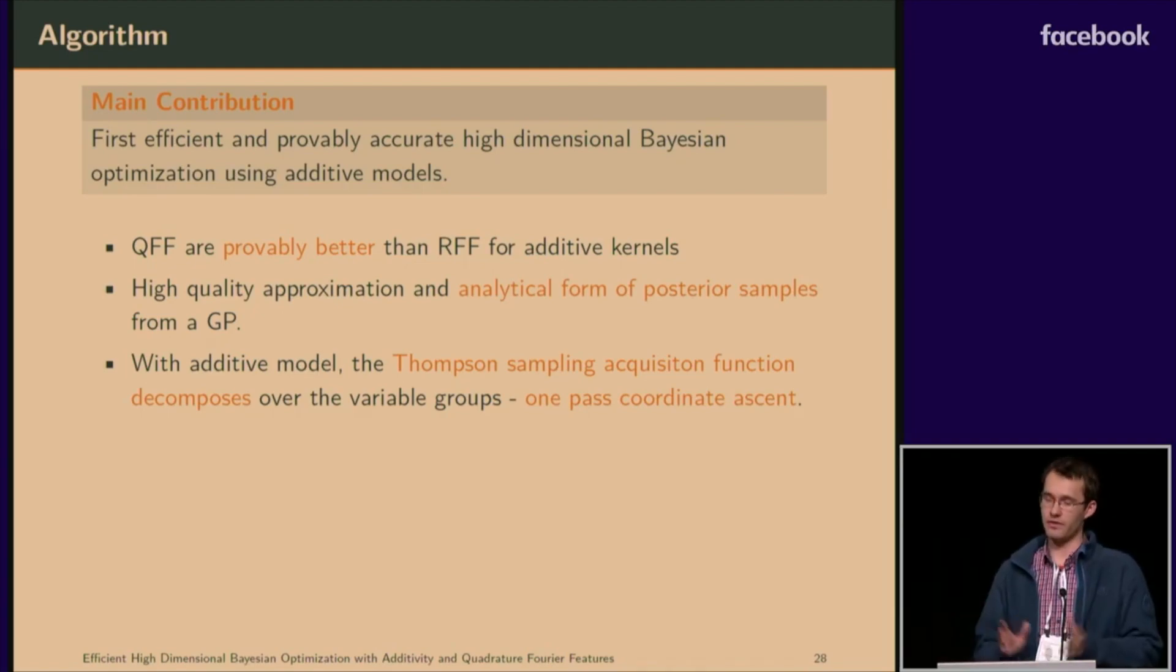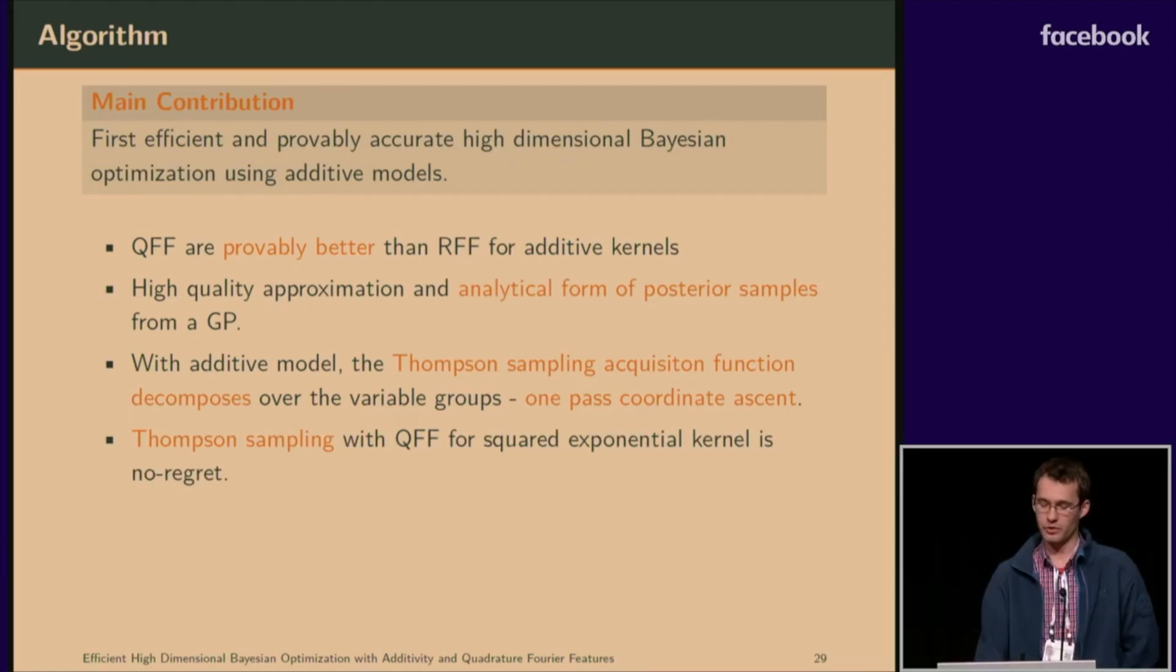Thomson sampling, which is one form of acquisition function, popular acquisition function, decomposes over the variable groups, over the additive variable groups, and leads to efficient optimization algorithm using just one path of coordinate descent. And Thomson sampling is also no regret for squared exponential kernel.